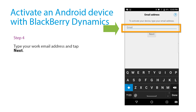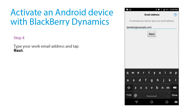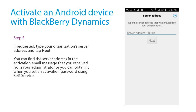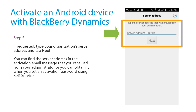Tap your email, type your work email address, and tap Next. If requested, type your organization's server address and tap Next. You can find the server address in the activation email message that you received from your administrator, or you can obtain it when you set an activation password using UEM Self-Service.